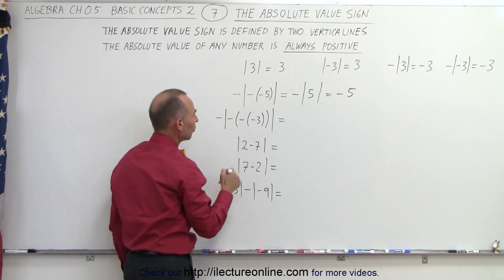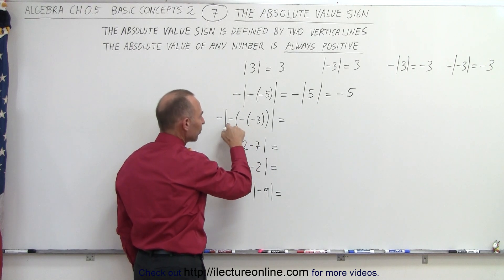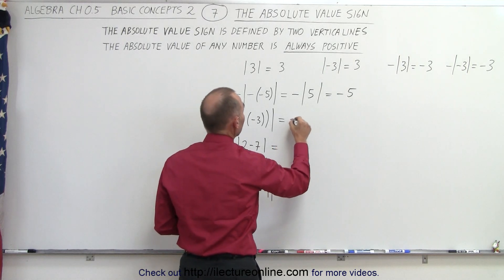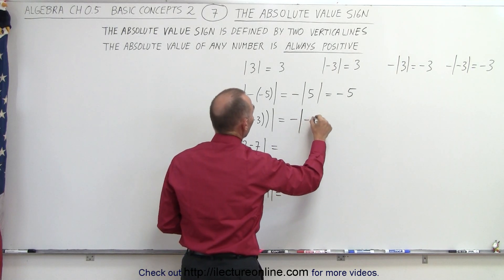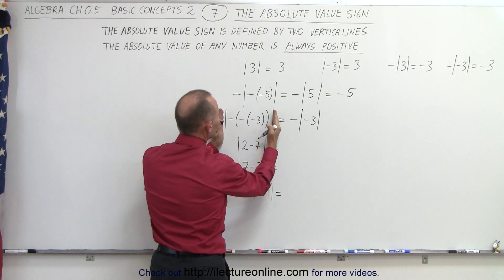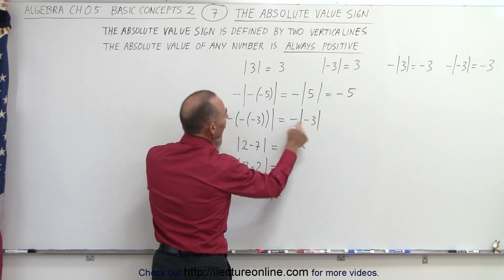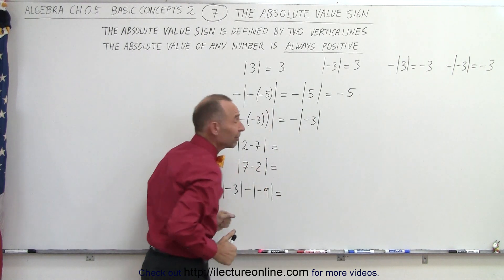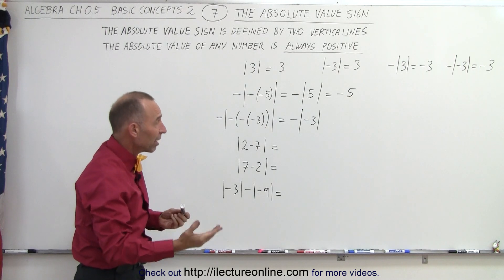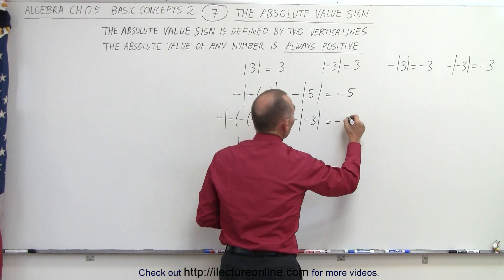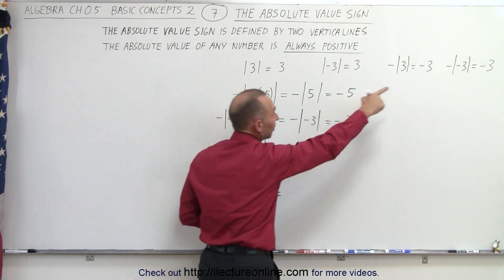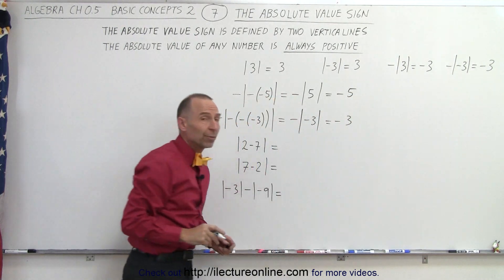Here we have a negative of a negative of a negative — three negatives multiplied together — which gives a negative number. So this can be written as the negative of the absolute value of negative 3. What's inside the absolute value signs is negative 3. The absolute value of negative 3 is positive 3. So that gives us negative of positive 3, which is negative 3. The negative in front, just like before, gives us negative 3 as the end result, but what's inside the absolute value signs does indeed give us a positive 3.